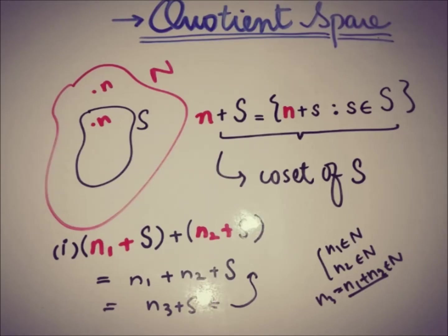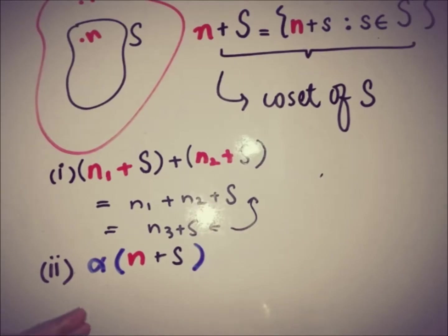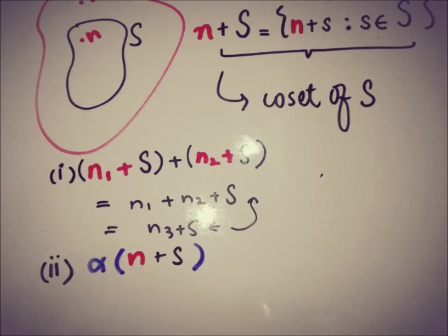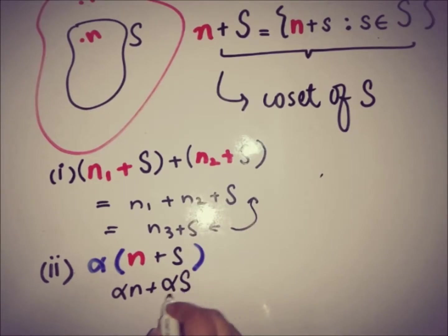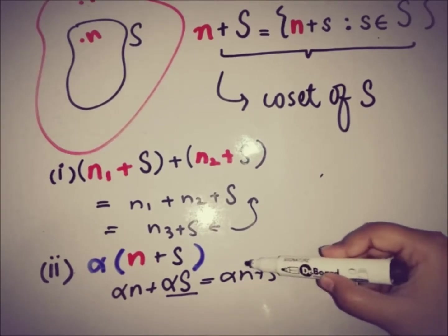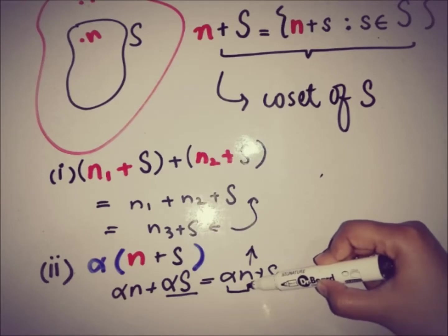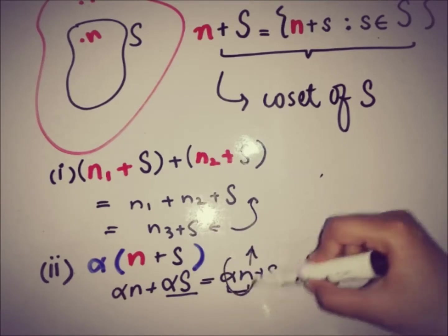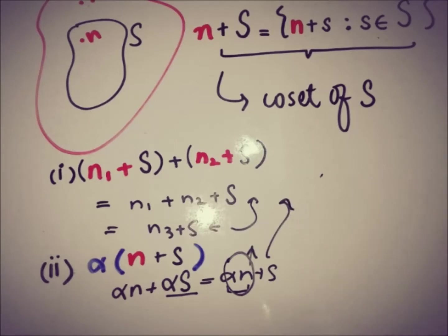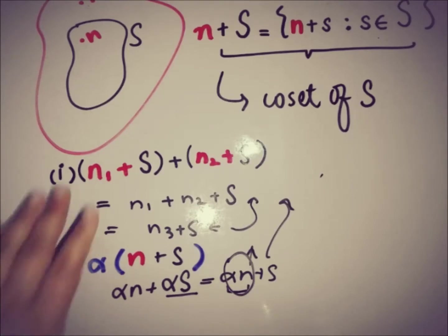For scalar multiplication: we have a scalar alpha and the element n plus S, which we can write as alpha times n plus alpha times S. Since alpha times S is just S, we get alpha·n plus S. Because N is a normed space, the scalar multiple of that element is also in N, so this is also an element of the coset under consideration.